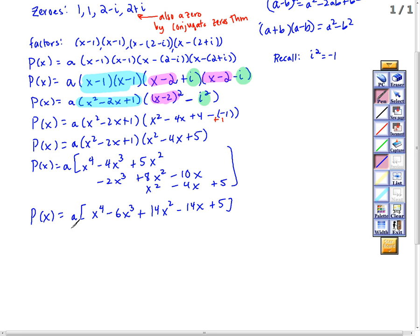And that is a whole bunch of polynomials that have degree 4 and those zeros. If I want something specific, I let a be anything I want it to be. That's it.